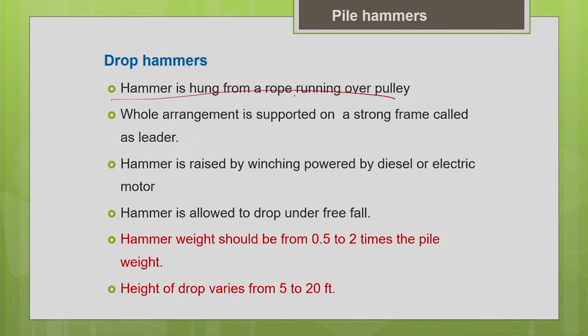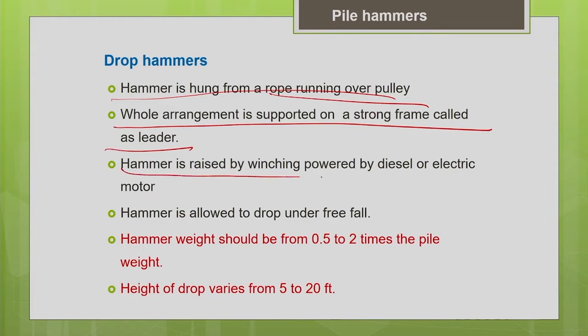The hammer is hung from a rope running over a pulley, and the whole arrangement is supported on a strong frame called the leader. The hammer is raised by winching powered by a diesel or electric motor and allowed to drop under free fall on the pile. When selecting the hammer weight, it is advisable to select a weight at least equal to the weight of your pile to get the desired blow energy. If the hammer weight is lesser, you must increase the height of fall, which increases impact velocity and driving stresses — particularly critical for concrete piles.